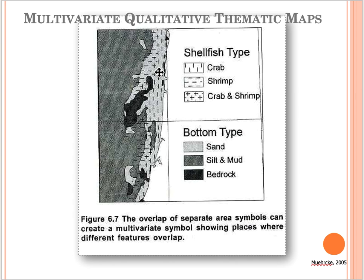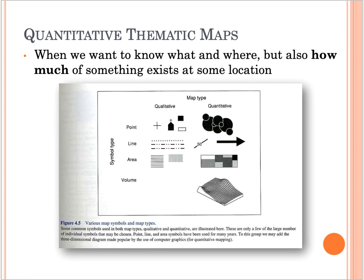Here is another multivariate qualitative thematic map showing us the shellfish type as well as the bottom type.